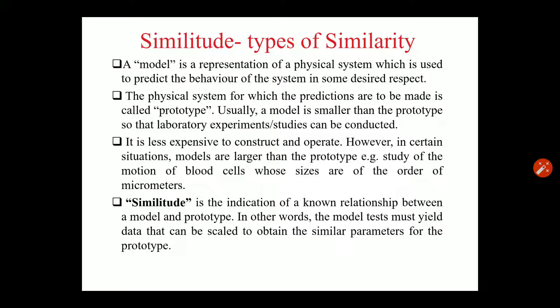The physical system for which the predictions are to be made is called the prototype. When we create the model, which represents the real world problem or system, then the real world object or system is called the prototype — which is the real world solution. The real world solution is the prototype, and the lab solution is the model.